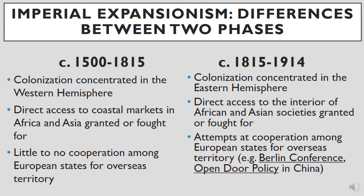Of course, that did not mean European maritime empires did not exist in the Eastern Hemisphere at all. Portuguese, Dutch, French, and English trade posts were established throughout the Eastern Hemisphere well before 1815. Additionally, the Spanish colonized the Philippines well before that mark. However, the general trend was the overwhelming concentration of colonial empire building in the Caribbean and the Americas between 1500 and 1815. As far as the Eastern Hemisphere was concerned, during the first phase European states sought direct access to coastal markets in Africa and Asia, whether by fighting for access or through negotiations. There was little to no cooperation among the participating European states over overseas access points, territories, and resources.